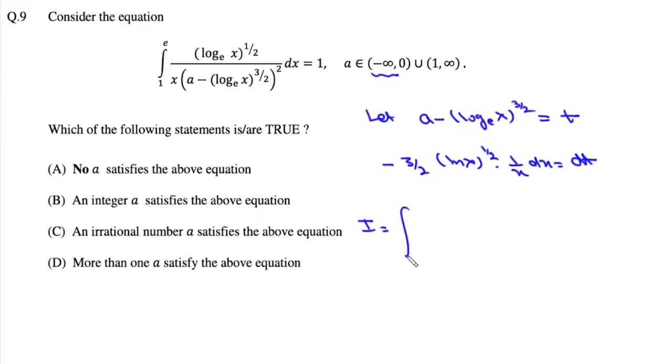So it'll be this minus two by three dt and here it will be this t square.